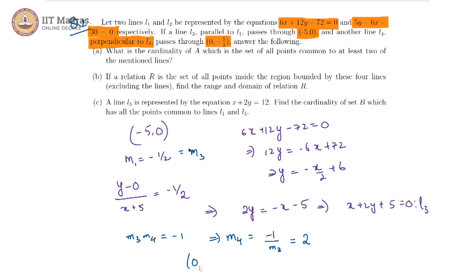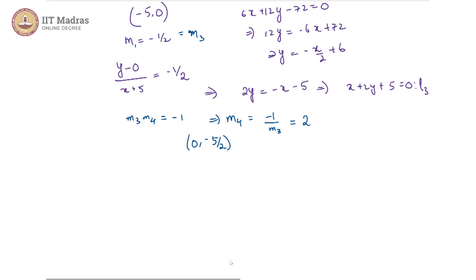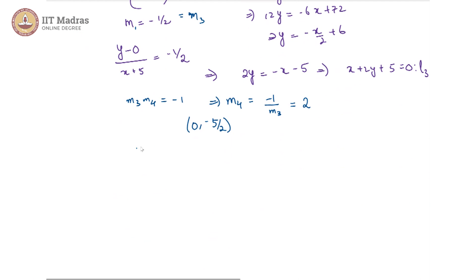We now have the slope of L4 and it also goes through this point. So again using point-slope form we have (y + 5/2)/x = 2, that would indicate y = 2x - 5/2. So this is our L4.